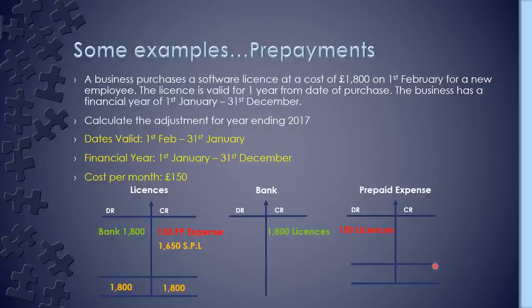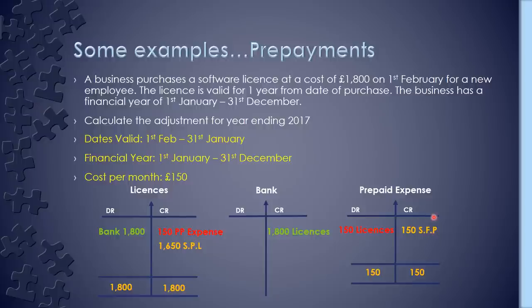Looking at the prepaid expense account: our total is £150, which gets credited off and debited into the Statement of Financial Position as your year-end adjustment. So the prepaid expense of £150 sits on the balance sheet as an asset at the end of 2017.